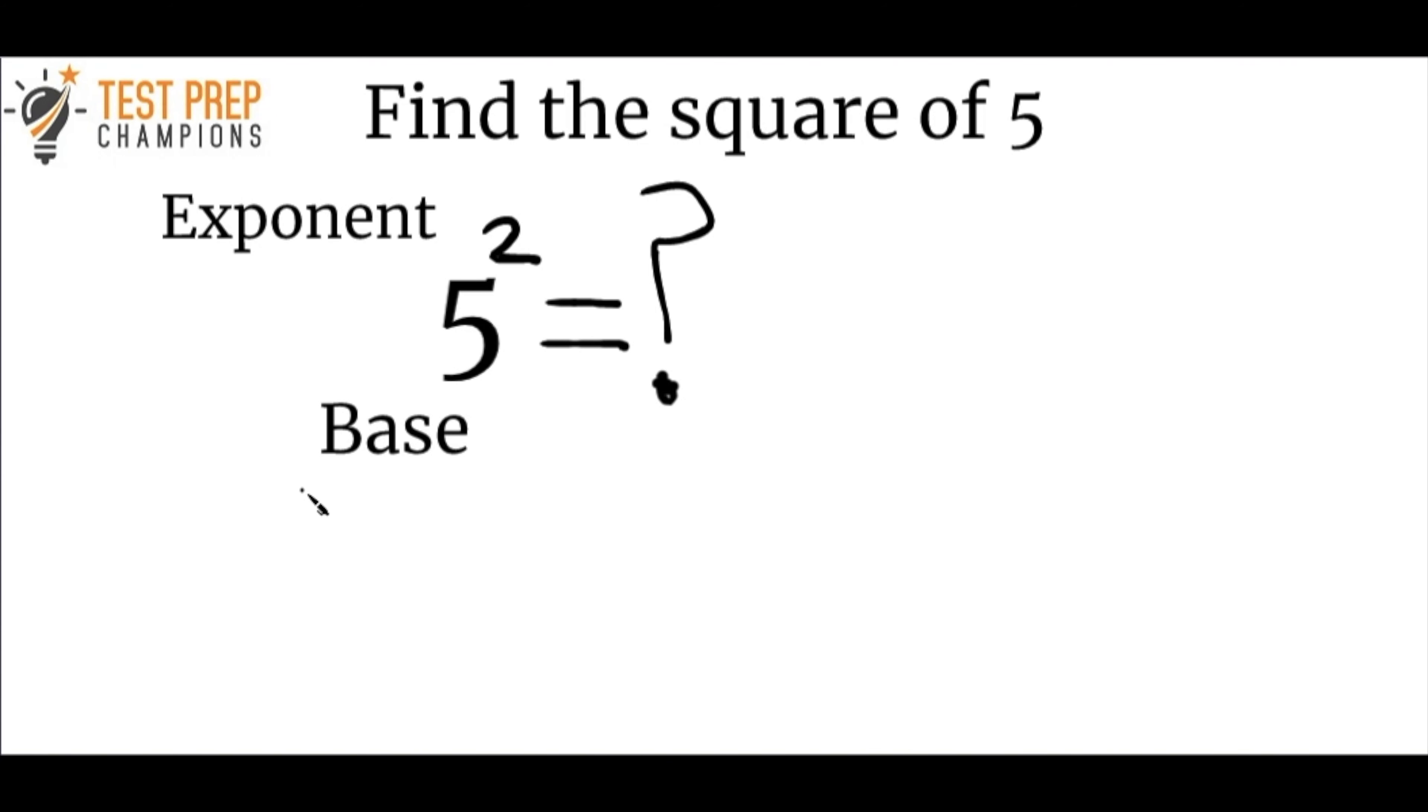So let's start by understanding how to find the square of a number. Whenever you see a question like this you can read this as either 5 squared or 5 raised to the second power, two different ways to say the same thing here. And we see that the bigger number is our base. So 5 is our base and this little number that's hanging out up top here is what we call the exponent here.